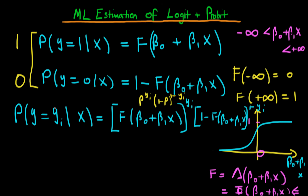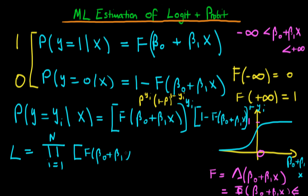That's the likelihood function for one observation. In reality we're dealing with a sample of n observations from a population. When observations are independent, we define the likelihood as the product from i equals 1 to n of each individual likelihood: f(beta 0 + beta 1 * x_i) to the power y_i, times (1 minus f(beta 0 + beta 1 * x_i)) to the power (1 minus y_i).